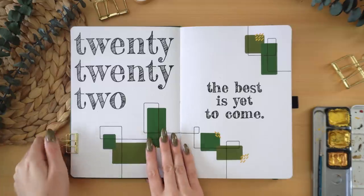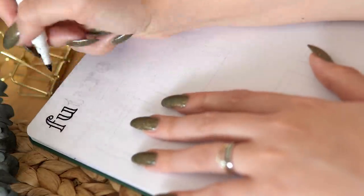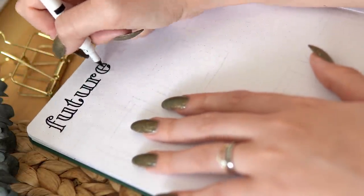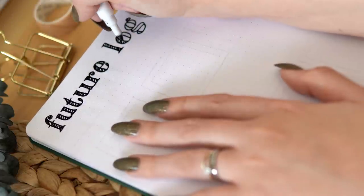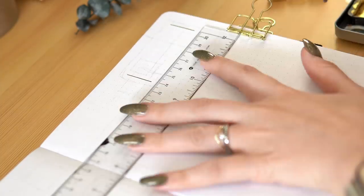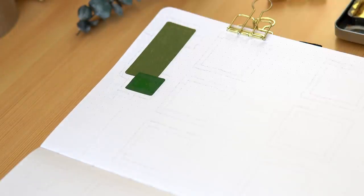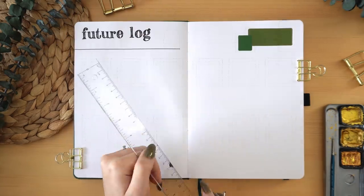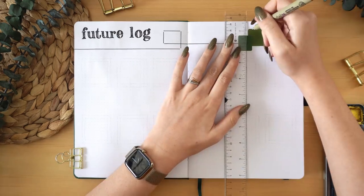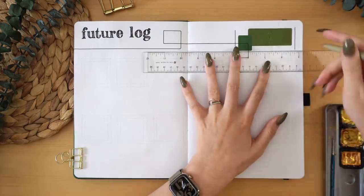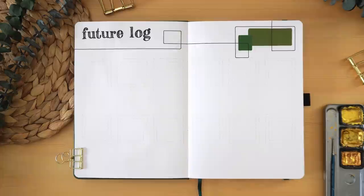Now I'm working on my future log, which is one of the most important spreads of my new bullet journal setup. I'm using my 2022 calendar stickers here from my shop. They are currently sold out, but if you go to my website you can either buy a digital version or sign up for the waitlist for the physical stickers.